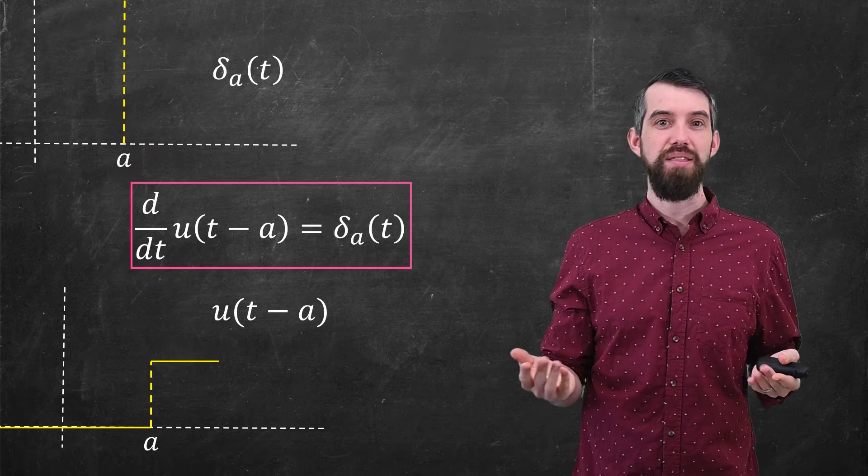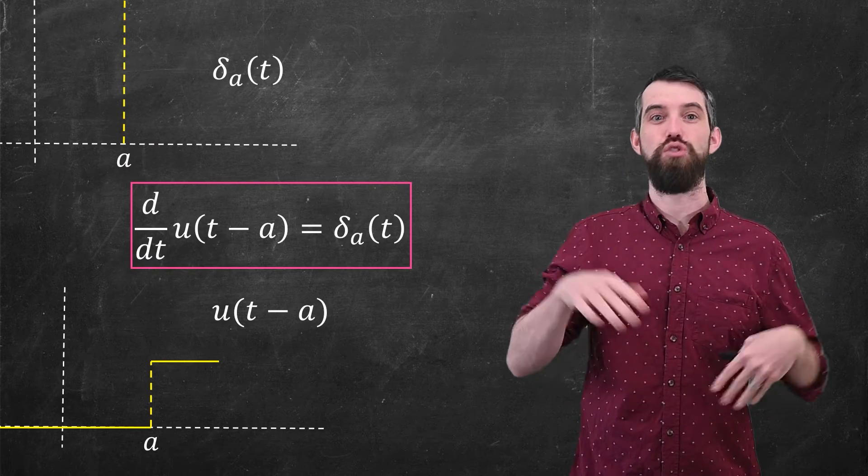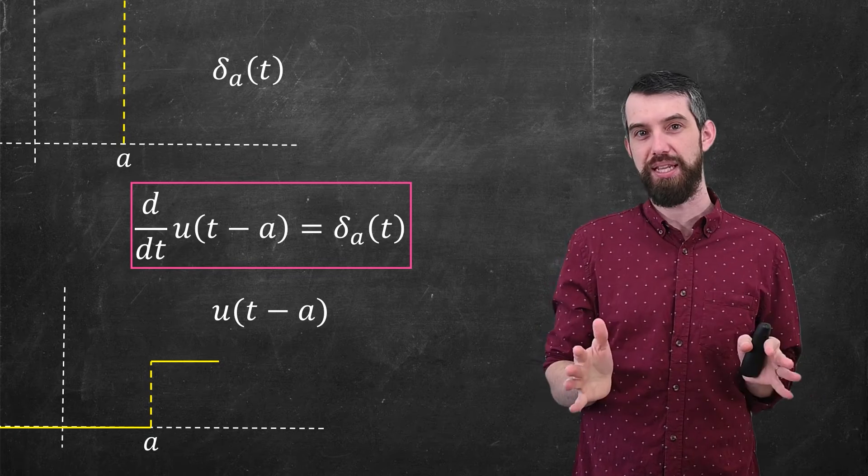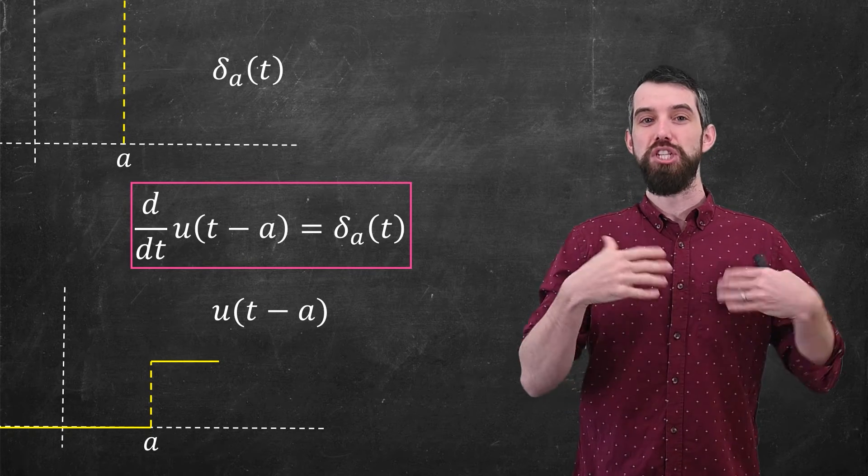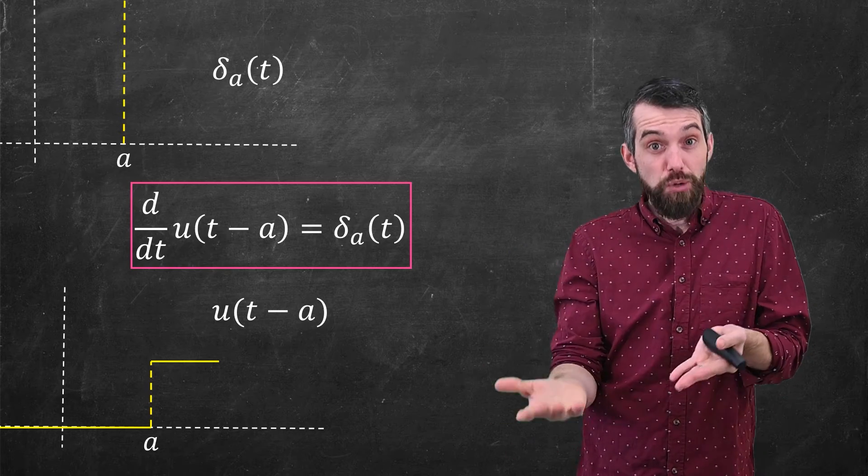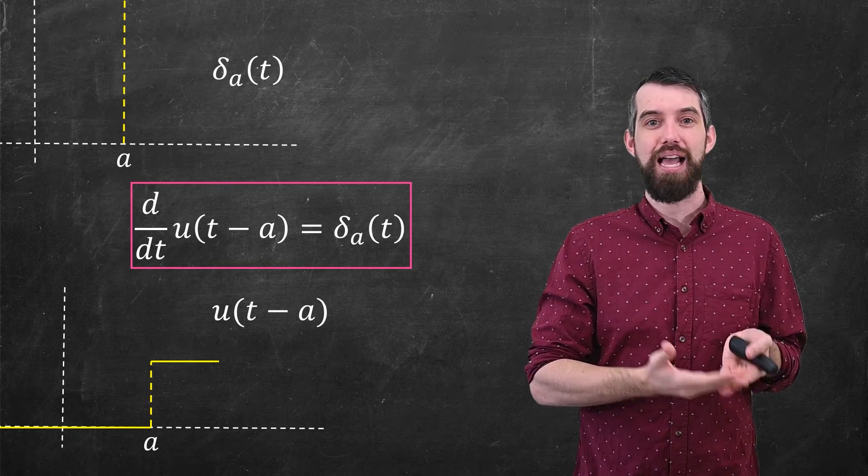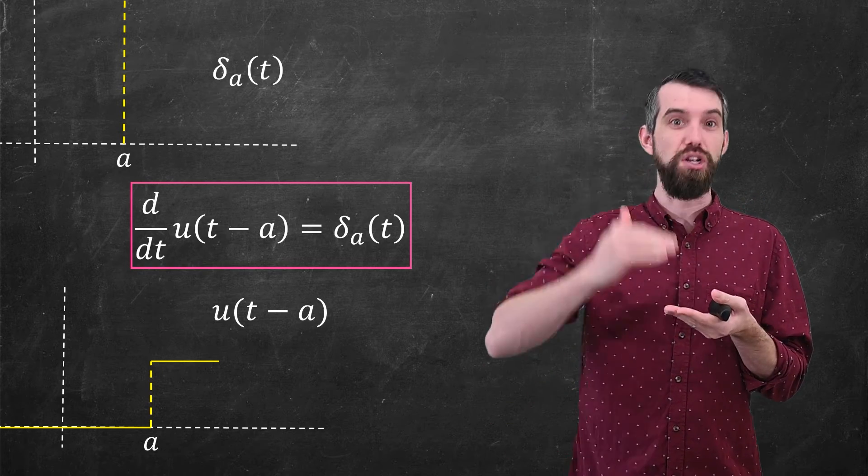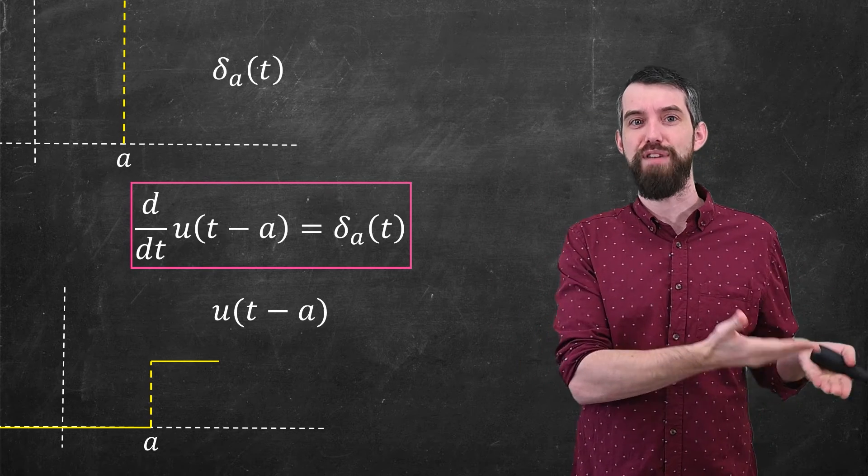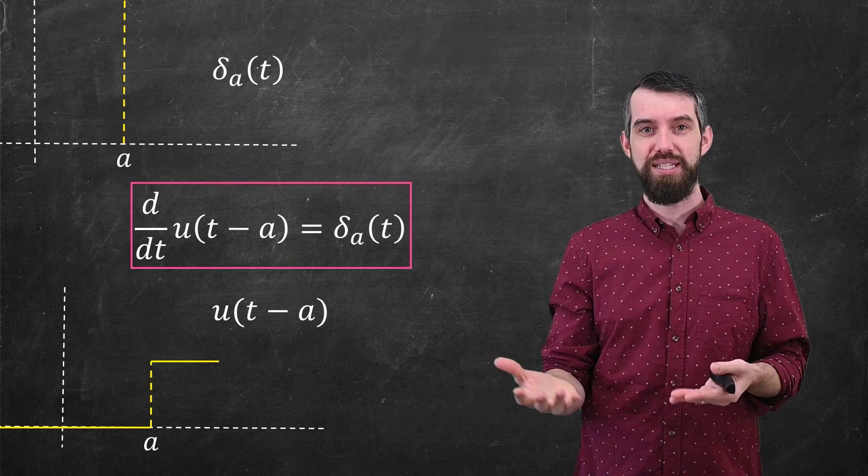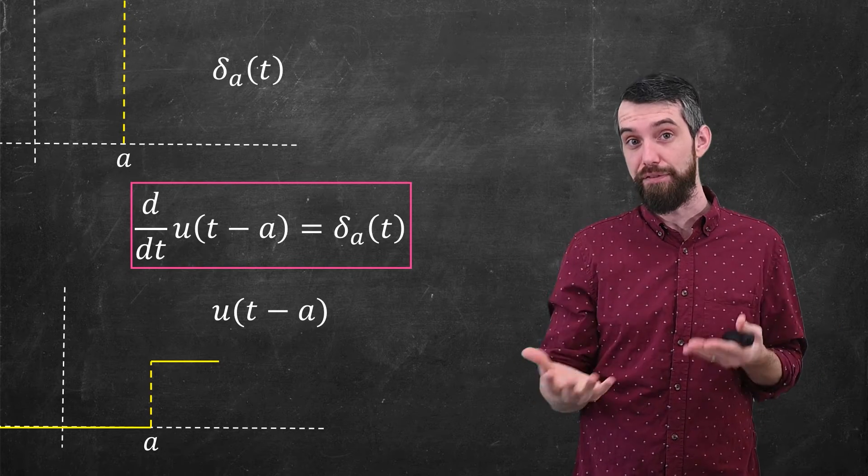Away from a, this is perfectly fine. The step function is just flat. Its derivative is 0, as is the delta function. That makes sense. But at the problem spot of t equal to a, this is just a definition. It's a reasonable definition because, as I say, the step function goes straight up and so it's kind of like having an infinite derivative. And the delta function is infinite at the value of a. So there's some sort of consistency, but nevertheless, this is just a definition.